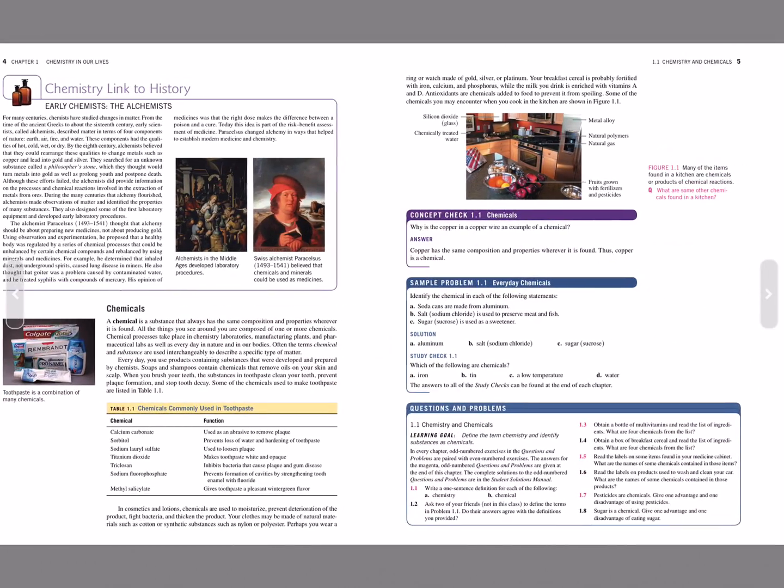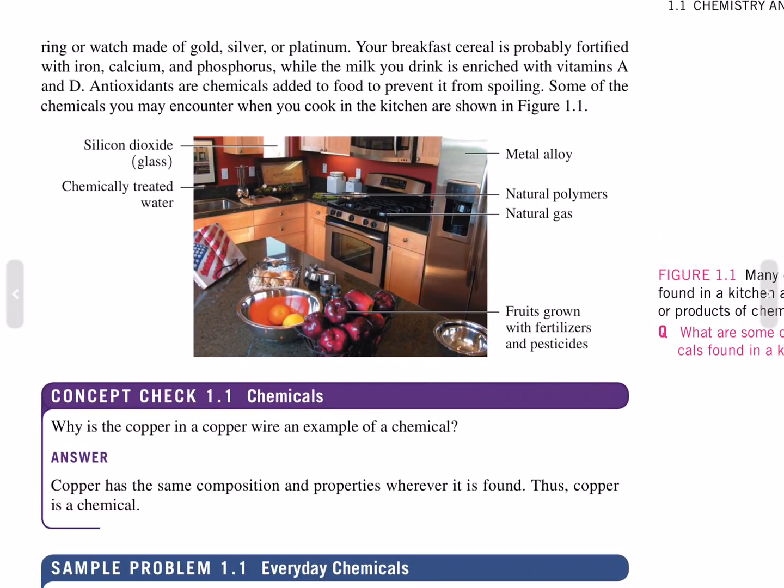Perhaps you wear a ring or watch made of gold, silver, or platinum. Your breakfast cereal is probably fortified with iron, calcium, and phosphorus, while the milk you drink is enriched with vitamins A and D. Antioxidants are chemicals added to food to prevent it from spoiling. Some of the chemicals you may encounter when you cook in the kitchen are shown in Figure 1.1.